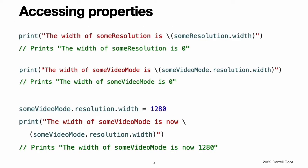Accessing properties. You can access the properties of an instance using dot syntax. In dot syntax, you write the property name immediately after the instance name, separated by a period, without any spaces. For example, someResolution.width refers to the width property of someResolution and returns its default initial value of zero. You can drill down into sub-properties, such as the width property in the resolution property of a VideoMode. You can also use dot syntax to assign a new value to a variable property.